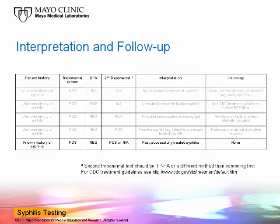Finally, you see a patient with a known history of syphilis who tests positive by the treponemal screening test but is negative by RPR. If the patient was treated for syphilis in the past, then these are the expected results and would indicate past, successfully treated disease. In this situation, no further testing or follow-up would be required. As you can see from these different scenarios, interpretation of syphilis serology results is complex and relies on careful consideration of the laboratory and clinical findings.